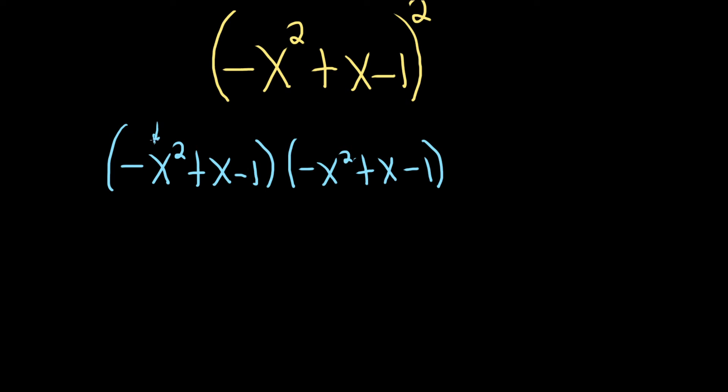So we'll do negative x squared times negative x squared. That's going to give us a positive x to the fourth because we add the exponents. Negative x squared times positive x is going to give us minus x to the third power because 2 plus 1 is 3.